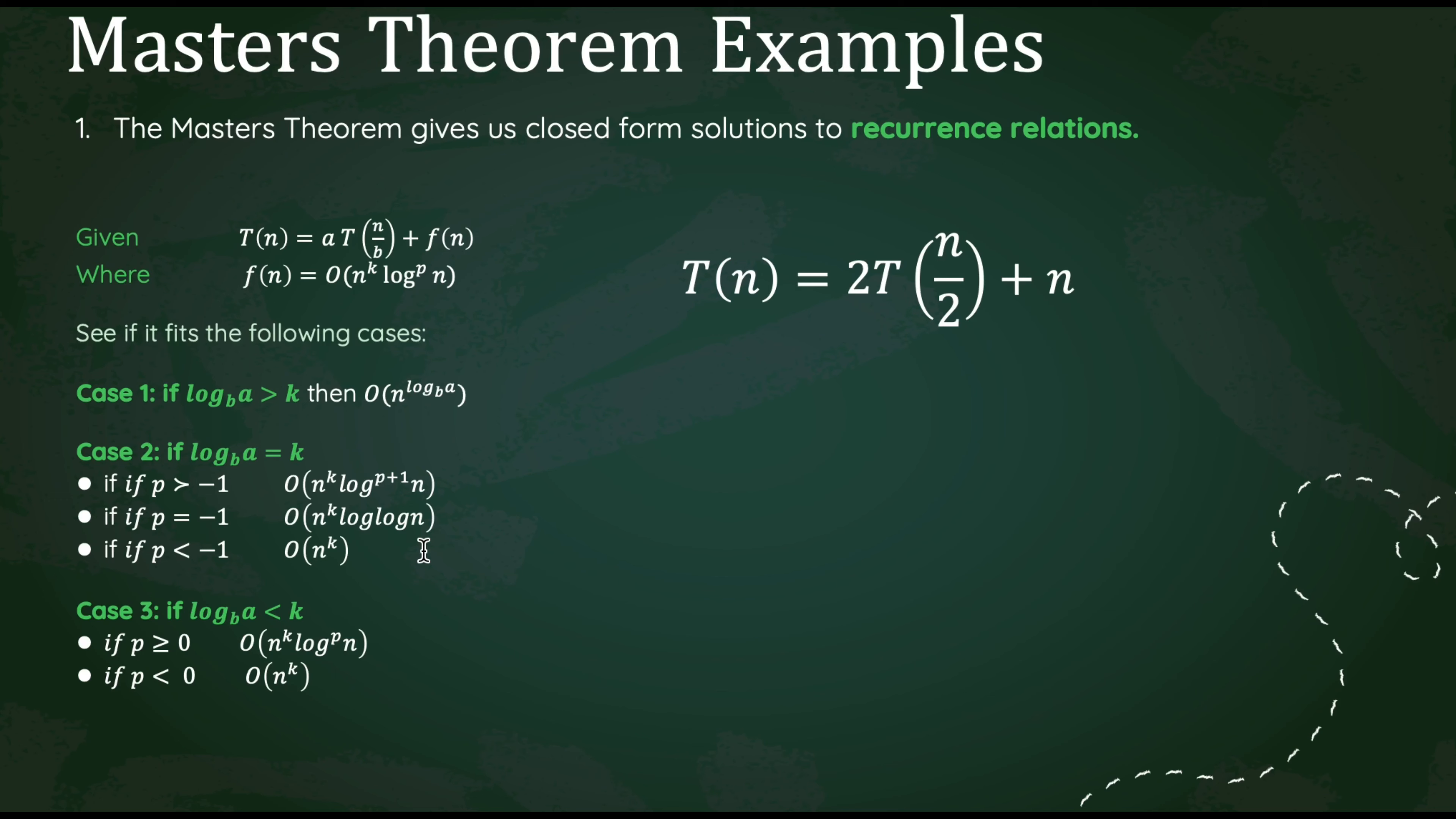Let's look at our first example. Here we have T(n) equals 2T(n/2) plus n. We need to start off by finding our a and b. We see that our a and b value are both going to be 2. Now we need to find our k. As we discussed earlier, our k is found from our f(n). The exponent that n is being raised to is k. Here our k is just 1.